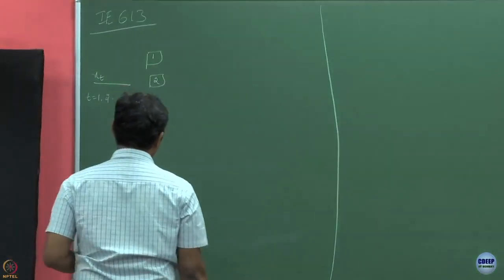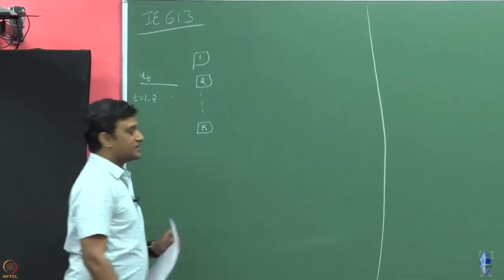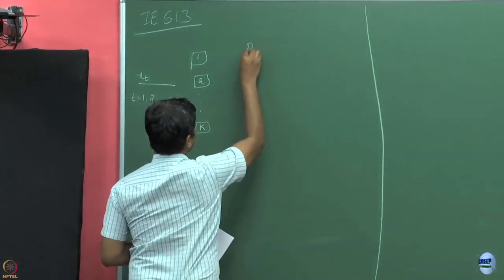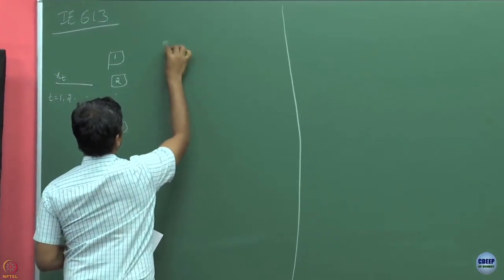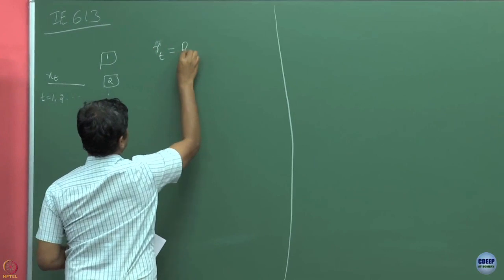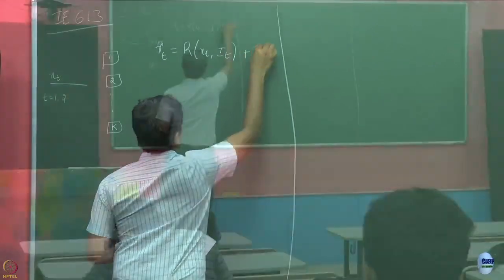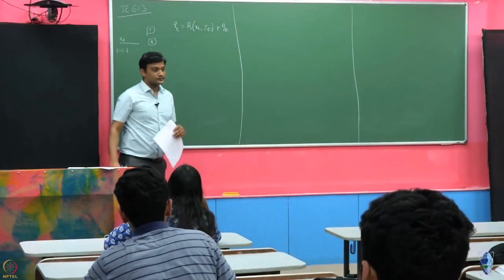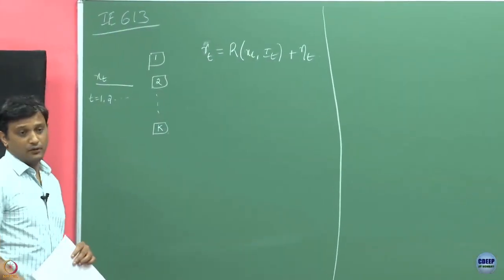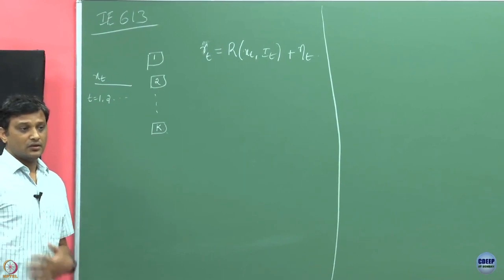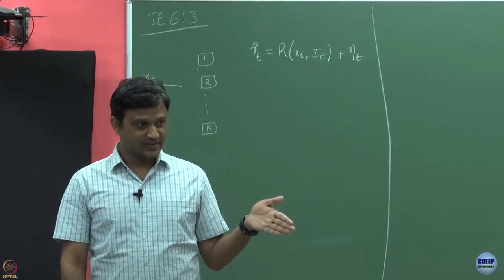When the learner is going to play an action i, he is going to get a reward which in round t is some function that depends on the context in that round and the arm he played, plus a noise term. For this we wanted to see how we should be choosing an arm in every round, looking at the context, so that regret is minimized.